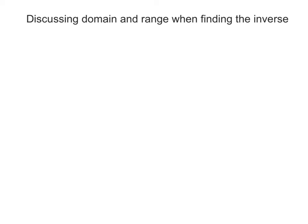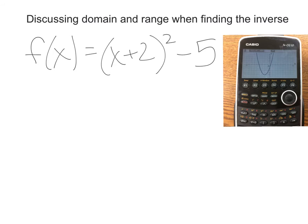Okay, so let's say we begin with f of x is equal to x plus 2 squared minus 5. So hopefully you remember enough about quadratics to know that this is a quadratic whose origin is at negative 2, negative 5. And here it is. I graphed it on our Casio calculator, and that's that function f.